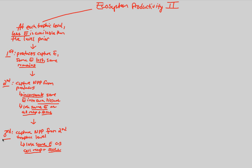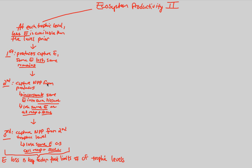This losing of energy at each and every level is a crucial concept in ecosystem productivity. Energy loss is a key factor that actually limits the number of trophic levels. Why don't we have 20 trophic levels? Because you lose energy continuously as you go through each level — more and more is lost, less and less is maintained. This comes from the energetic hypothesis established in our previous lecture.